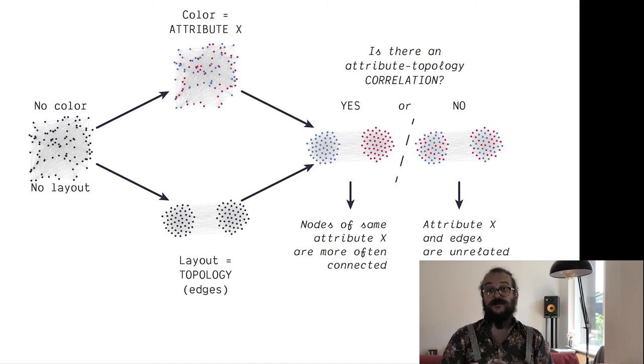They may correlate or they may not correlate. If they don't correlate, it means that you're going to have a mix of colors in each cluster. In that case, it means that the attribute is independent of how the nodes link to each other. But if they do match, it means that your attribute explains or is explained by the behavior that leads certain nodes to connect to other nodes.